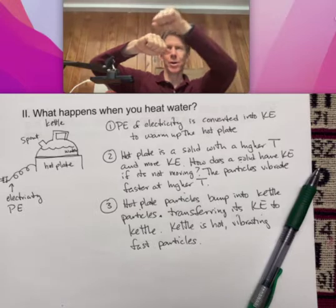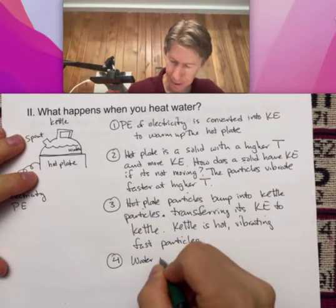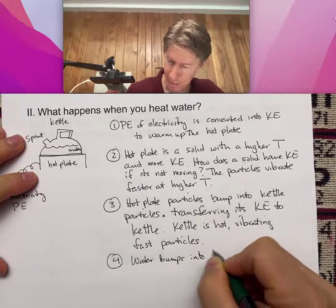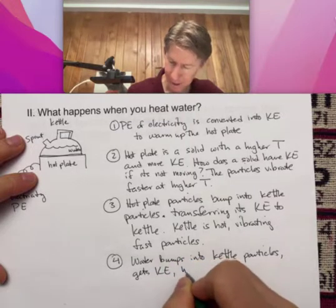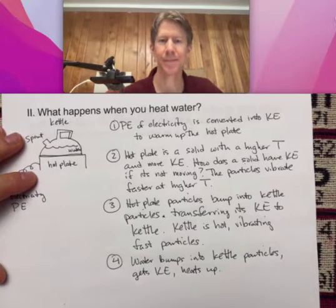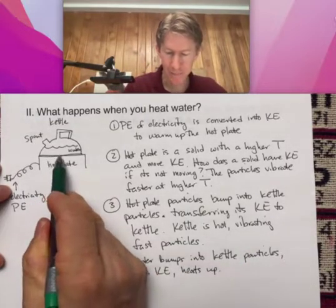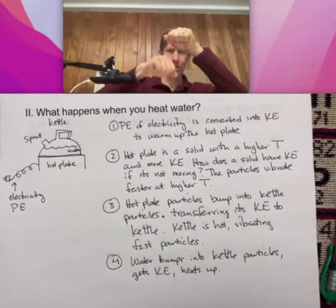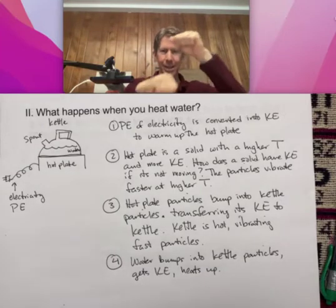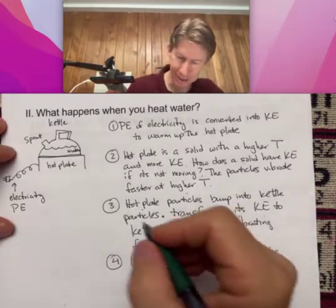Now the kettle is hot and here's the water. The water is a liquid, so it's moving around, and the water bumps into the kettle particles and gets some of that kinetic energy. Water bumps into kettle particles, gets kinetic energy, heats up. Since the water at the bottom is touching the kettle — the hot part — it then moves away, and colder water gets down there, bumps into the kettle, and heats up too. So you also have motion of the water particles, and eventually everything gets hot inside the water in the kettle.